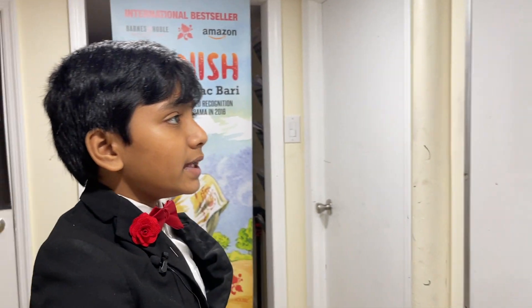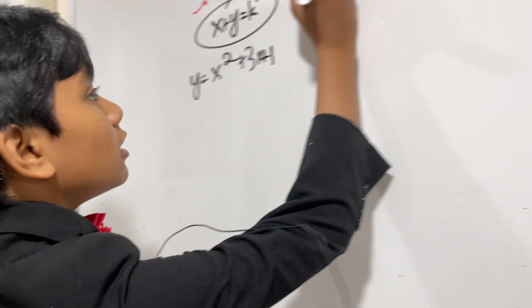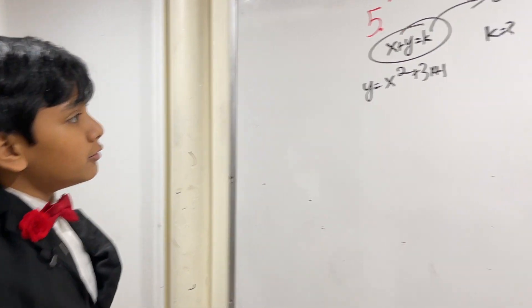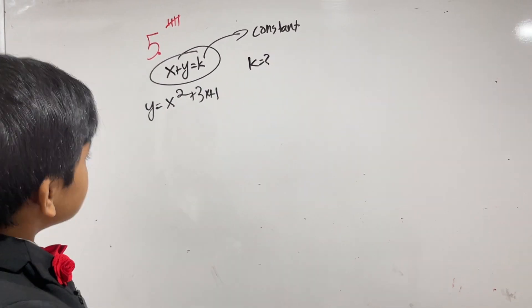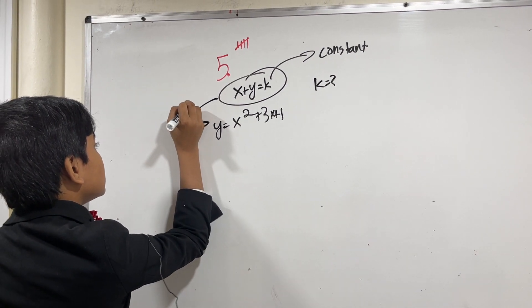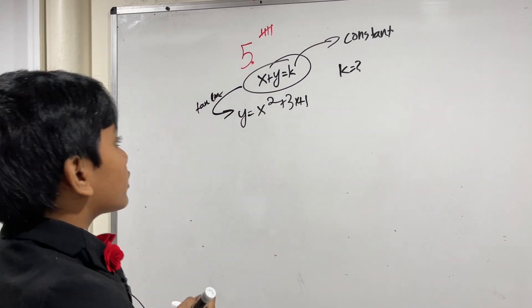So basically, what it's asking is, what is k? Now, this might seem hard to find, but let's see how we can do it. This is a whole tangent line problem. So what are we going to have to do, first of all?